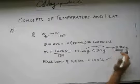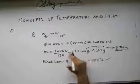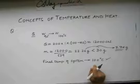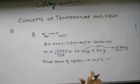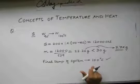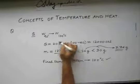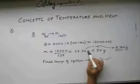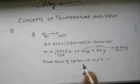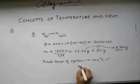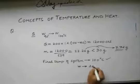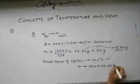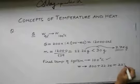This much steam has released its latent heat of vaporization to convert itself to 100 degree Celsius water. Therefore, the amount of water that remains in the container is the 200 grams we had initially plus 22.26 grams which is created from the steam. So the water remaining in the container is 200 plus 22.26, which is 222.26 grams.